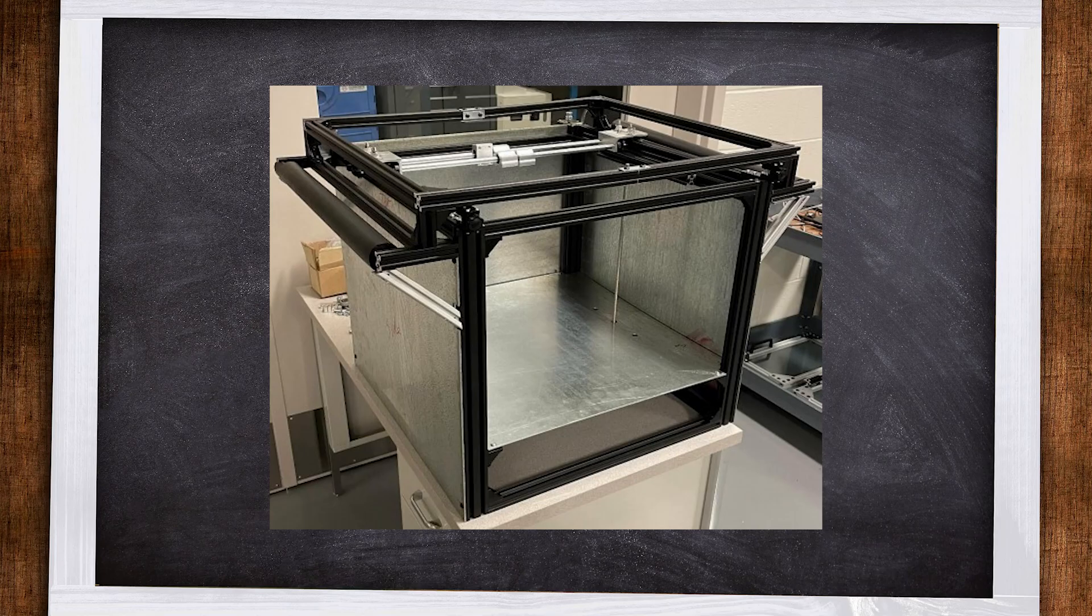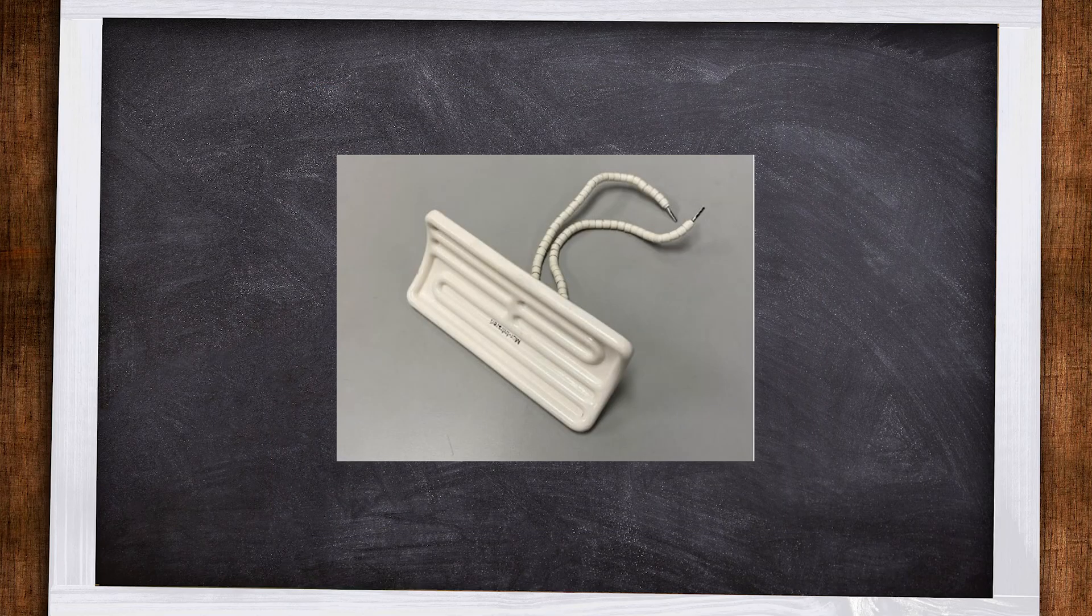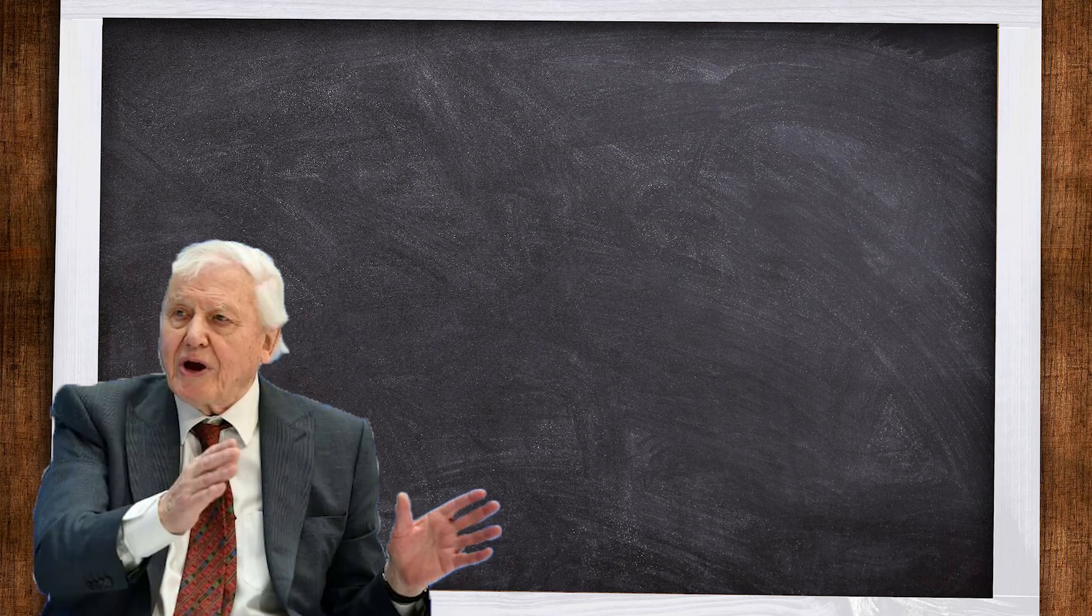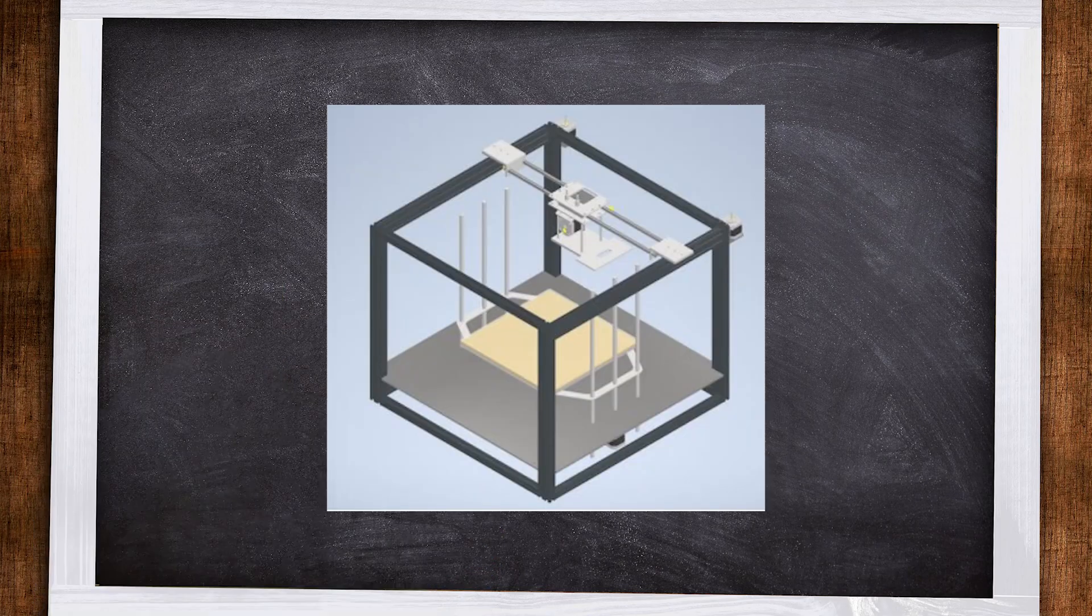The coated fibre then enters the printer enclosure that is heated by ceramic radiation heaters to about 200 degrees Celsius. The enclosure houses multiple components, most notably the XYZ motion system.